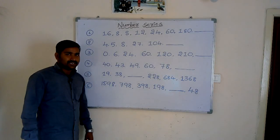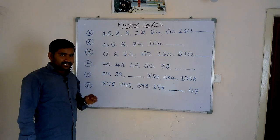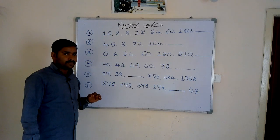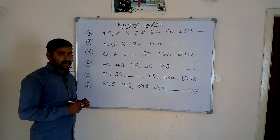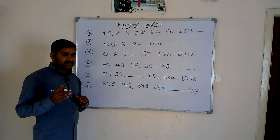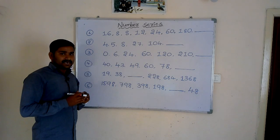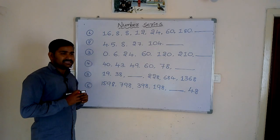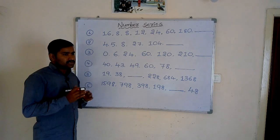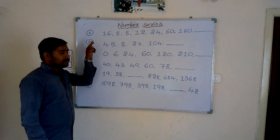Good morning friends, my name is Anil Kumar. Today our topic is number series. In competitive exams, number series carries a minimum of five marks weightage. In this topic there are different models — if you practice 40 to 50 models, you will definitely get four to five marks. The logics involved include addition, subtraction, multiplication, division, squares, cubes, near-to-squares, near-to-cubes, and prime numbers.